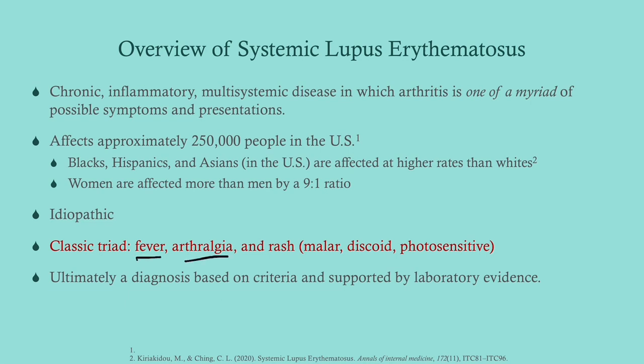Look for a young woman — maybe a young white woman or a young woman of color — coming in with joint pain, a fever, and a rash. It is idiopathic. The classic triad is fever, joint pain, and a rash. That rash can come in a variety of forms; most commonly it's a malar rash. However, it can be discoid, and often these patients will get rashes if they spend too much time in the sun. Ultimately this is a clinical diagnosis supported by laboratory evidence, very similar to RA in that regard.